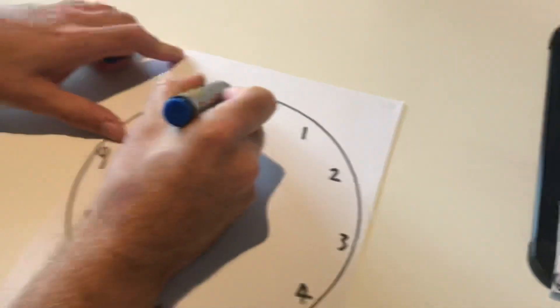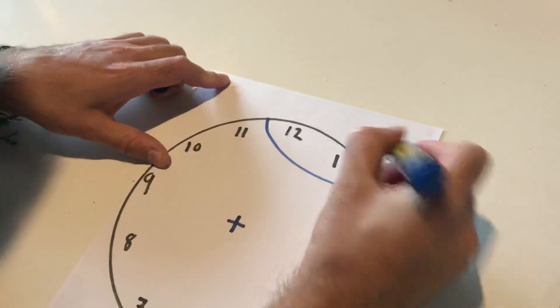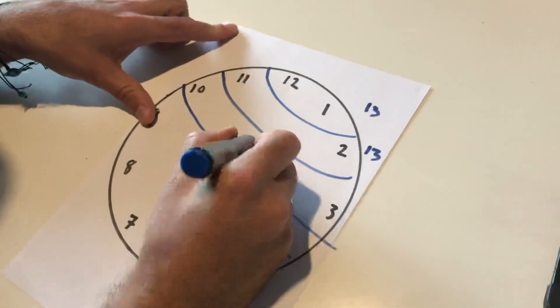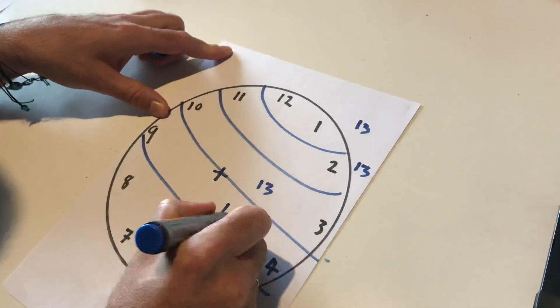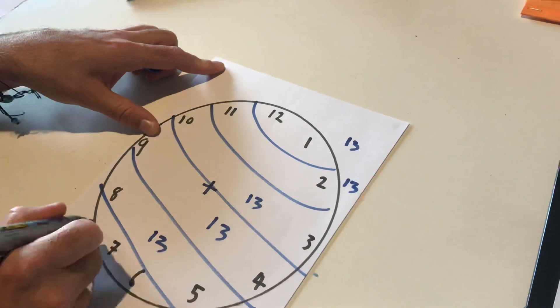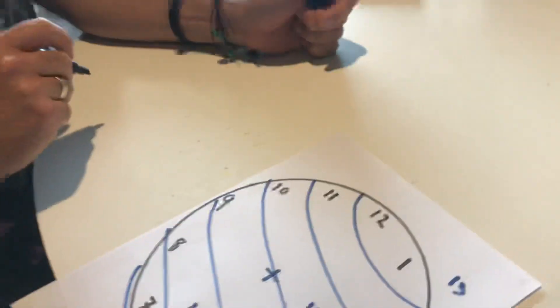Yep, they can see. 13. 12 plus 1? 13. 11 plus 2? 13. 10 plus 3? 13. 9 plus 4? 13. 8 plus 5? 13. And 7 plus 6? 13. That's cool.